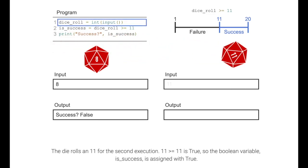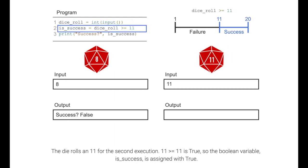The die rolls an 11 for the second execution. 11 greater than or equal to 11 is true, so the Boolean variable is_success is assigned with true.